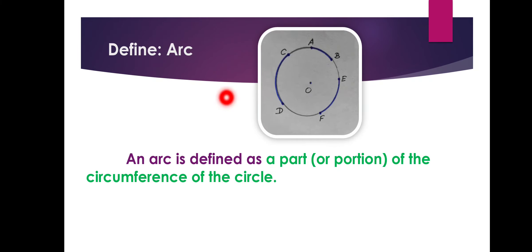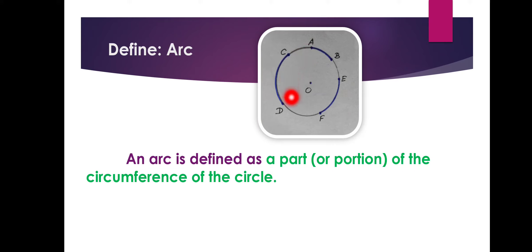Next, arc. What is defined as an arc? An arc is defined as a part of the circumference of a circle — a part or portion. We have points here. The portion between A and B, or A and C, or C and D, or the portion between D and F, or between E and F, or B and E — these are arcs in this picture. O is the center, the fixed point. An arc is a part or portion of the circumference of a circle.